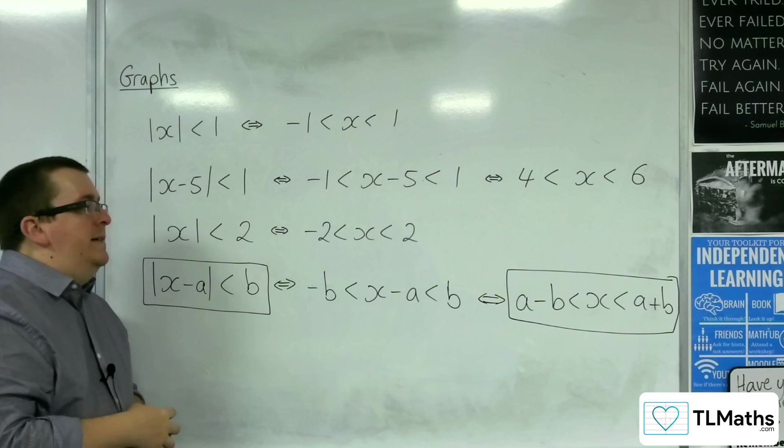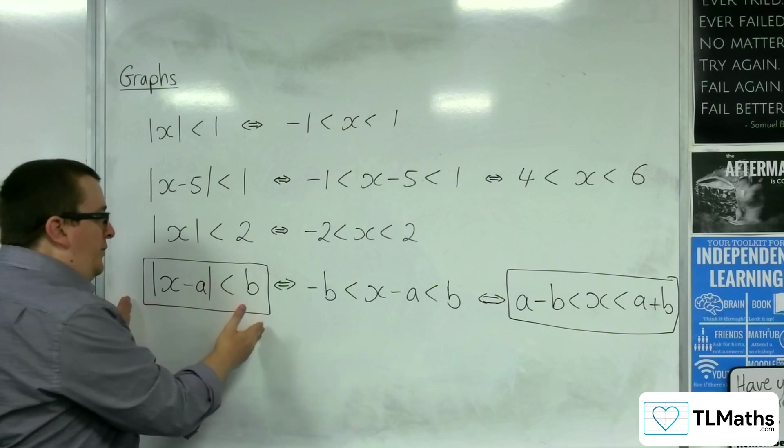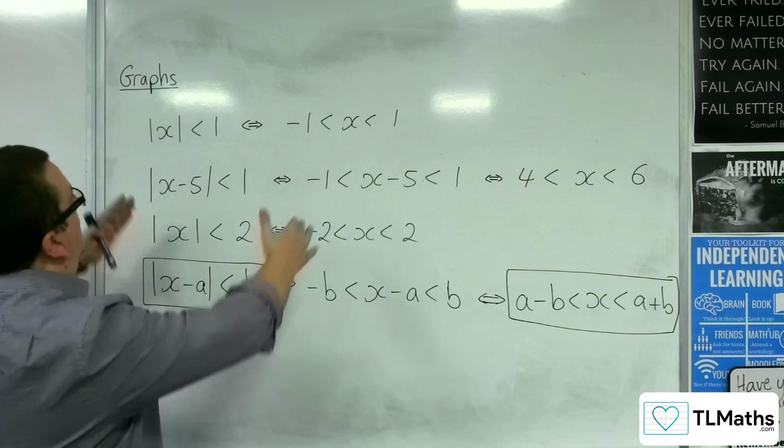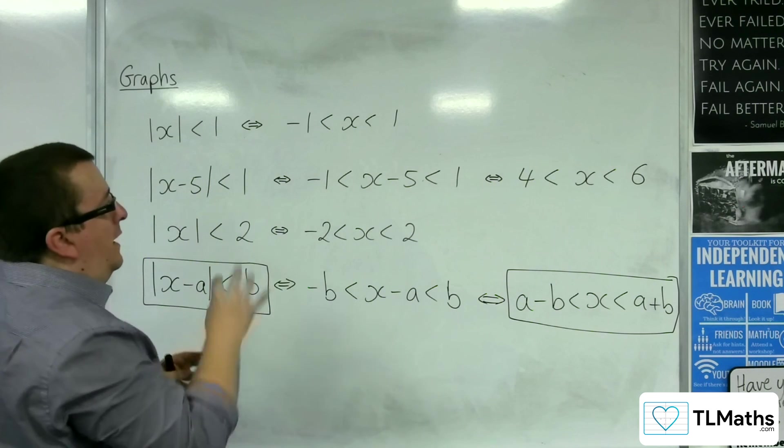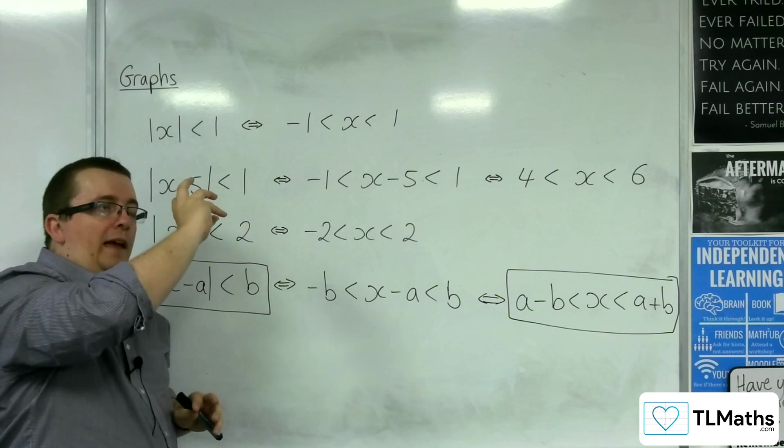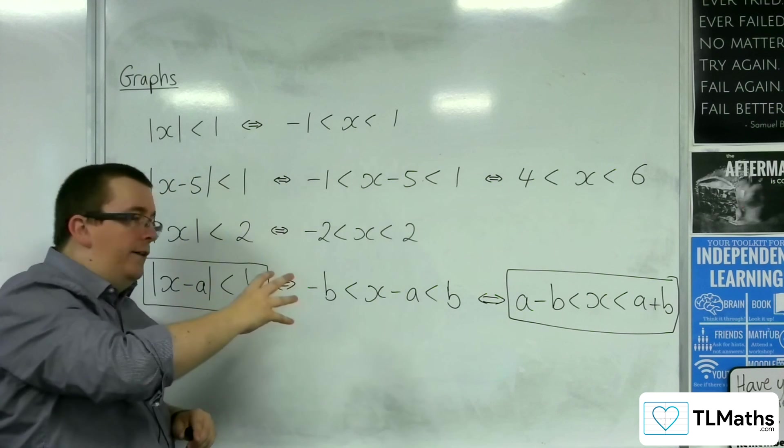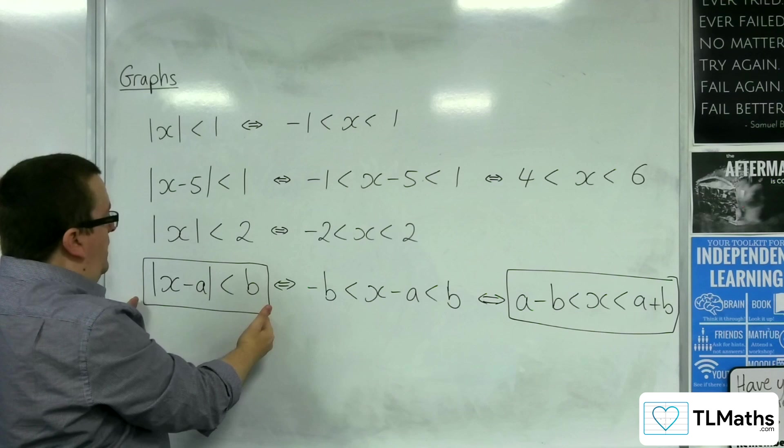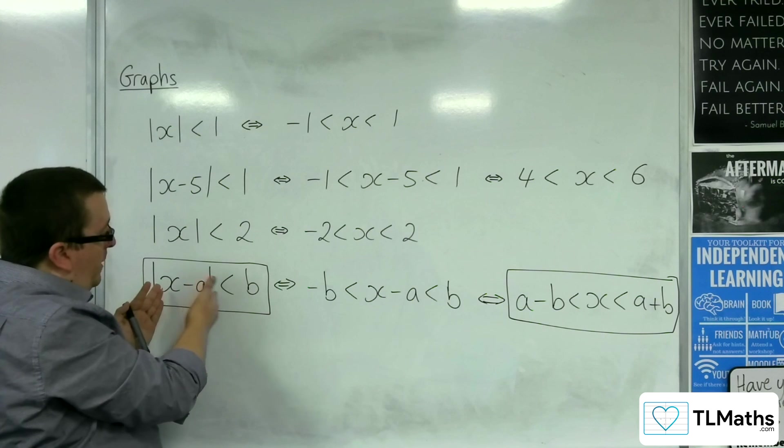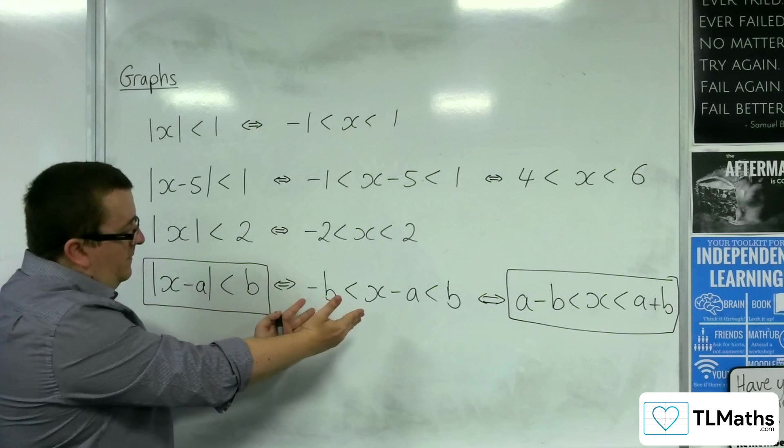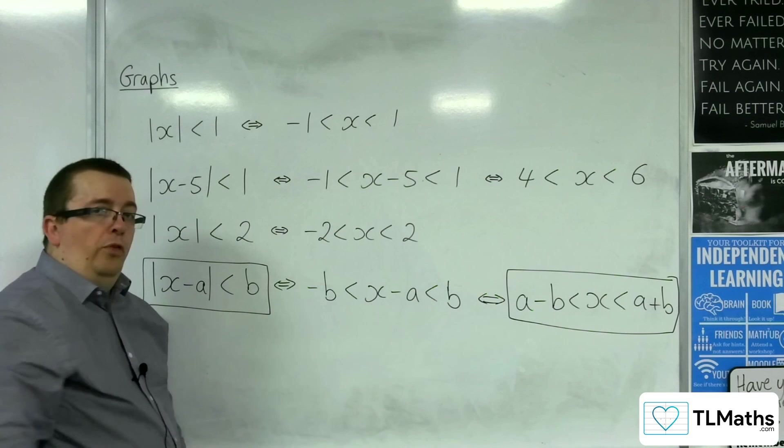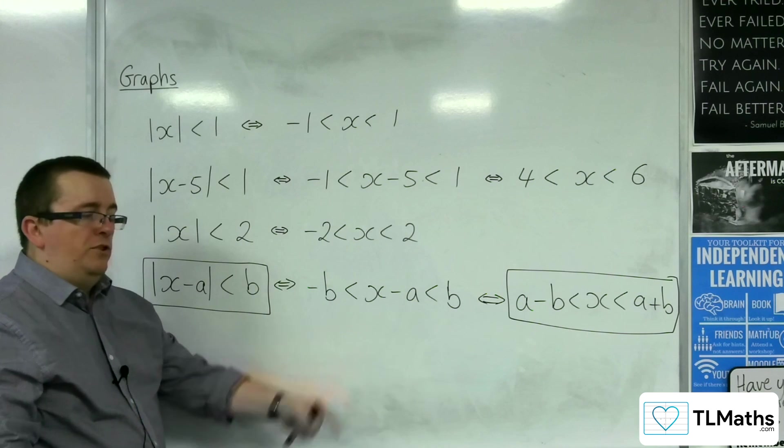So, be aware that you can do this. And it's all coming back to that mod x is less than 1. And thinking about it as a modulus inequality with the graph, that this would have to be between the x minus a would have to be between the minus b and b. And then adding a to all three columns gets you to the result.